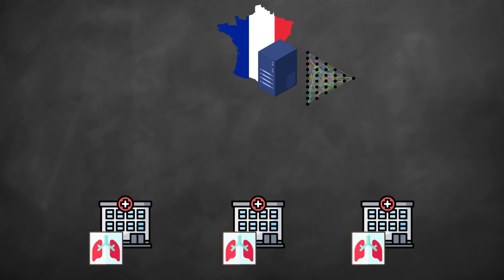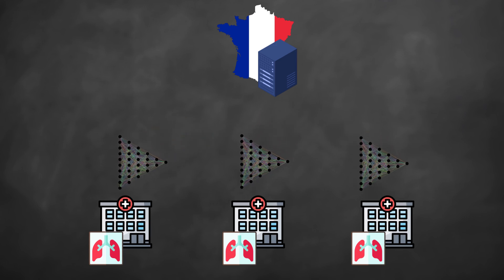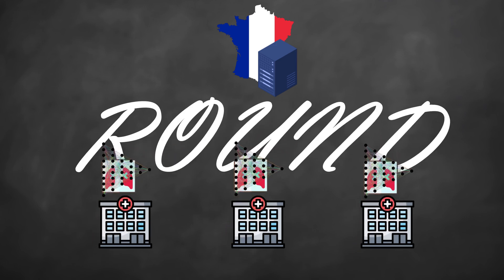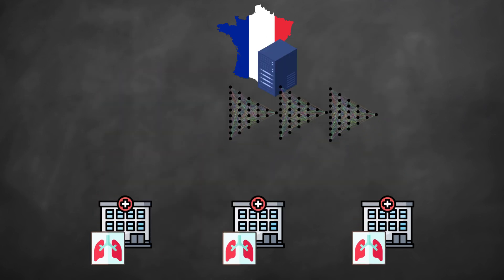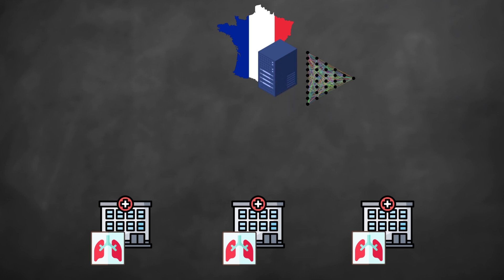This learning phase is called a round, a bit like in boxing. It is by carrying out several successive rounds that the overall model of the server will be able to learn effectively. At the end of the training, the server will be able to detect lung cancer more reliably than each hospital individually, without ever having seen a single piece of data.